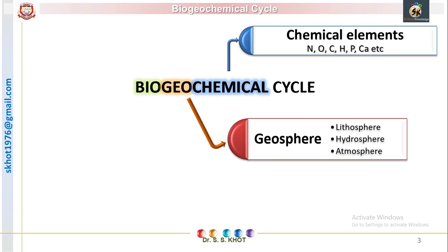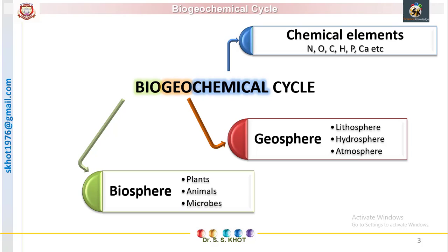The geosphere has three major parts. The lithosphere is the solid covering present on the earth — this is the earth's crust. The hydrosphere is the covering of water, and the atmosphere is the gaseous cover around the earth. The biosphere includes living organisms, classified into three groups: plants the producers, animals the consumers, and microbes the decomposers.